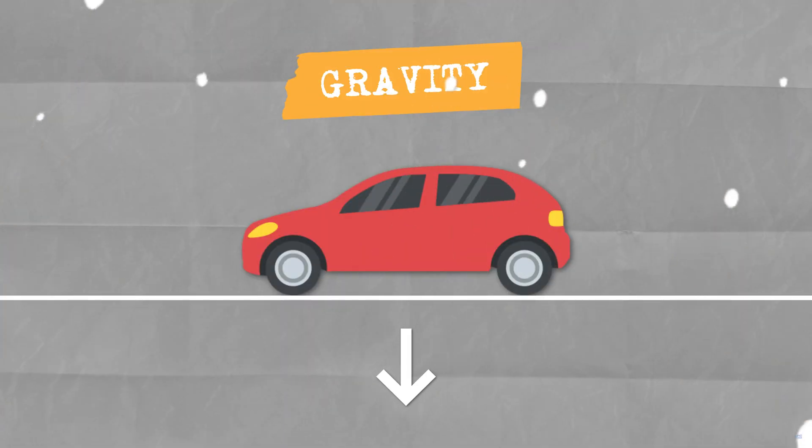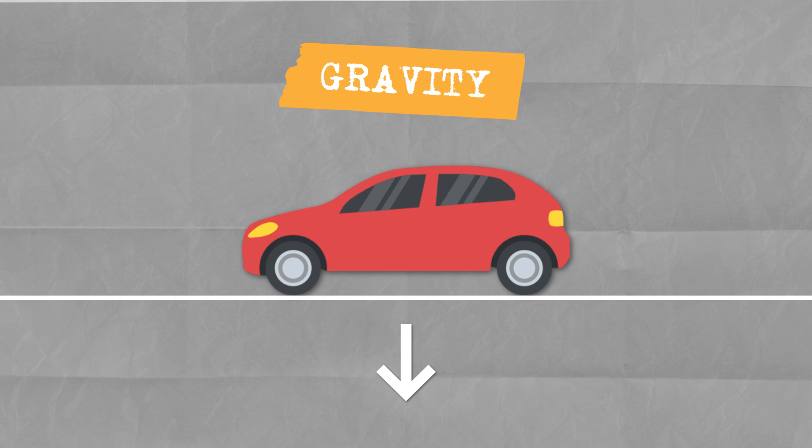Now another question: while this car is here and not moving, do you think there are any forces acting on it? If you said no, you're actually wrong. Even though it's not moving, that doesn't mean there aren't any forces acting on it. There are actually two forces acting on it — one is the earth trying to pull it towards the center, the force of gravity, and the other is the table being strong enough to hold and counter that force, resulting in equilibrium.